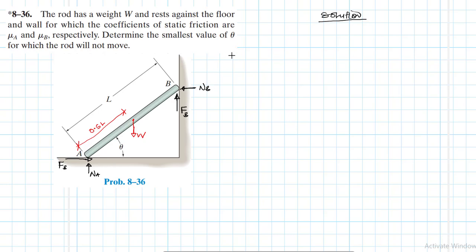So how many unknowns do we have here? We have F_A, F_B, N_A, N_B, and θ. The idea is L and W are known. They are given as L and the weight is given as W. So we have five unknowns.